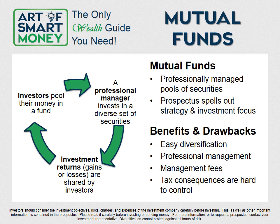Another advantage is that mutual funds offer a very simple way to diversify your portfolio since even a small amount of money can be shared across many different investments. One of the downsides, though, is that the tax consequences can be hard to control. If you have a brokerage account that's not in a qualified account like a Roth IRA, traditional IRA, or 401k, and the fund manager sells a stock at a profit, those profits are pushed down to you as a mutual fund holder and you have to pay taxes on them — you don't control whether or not that happens.